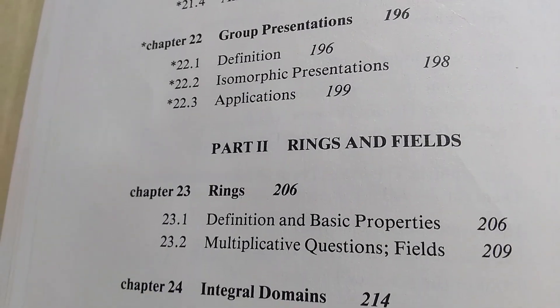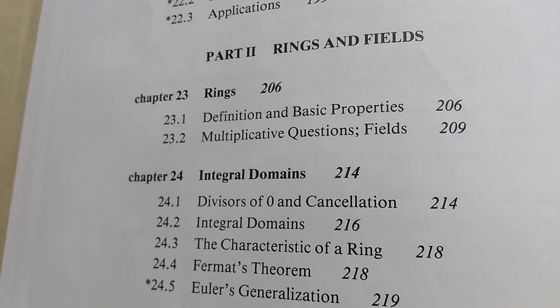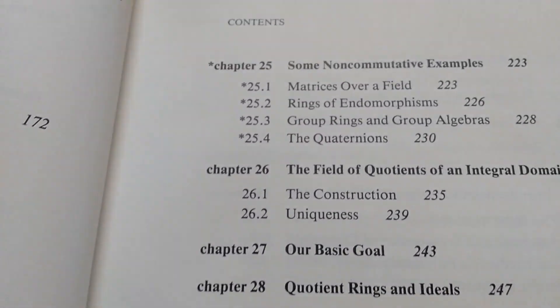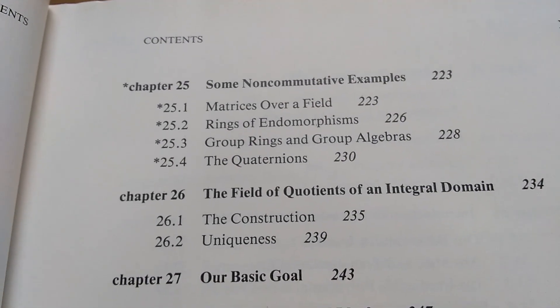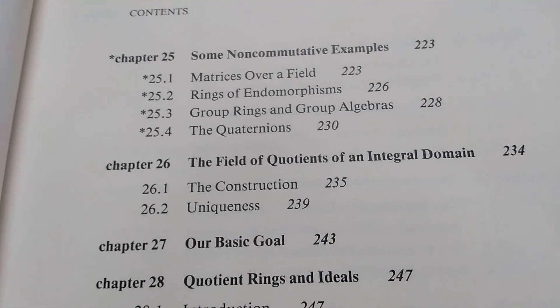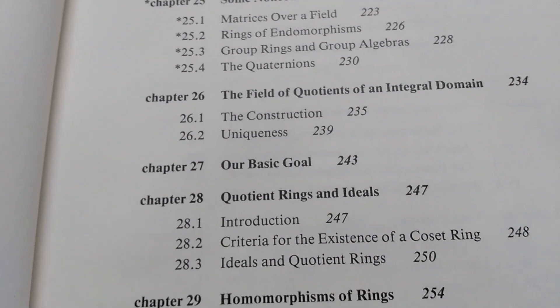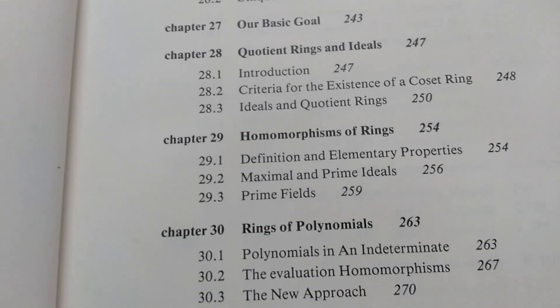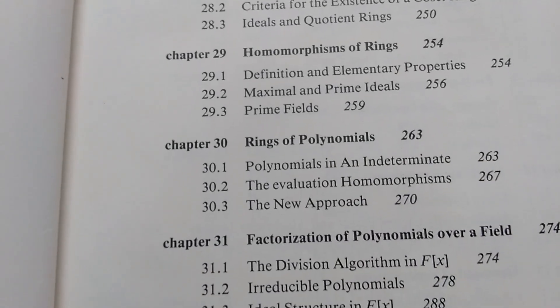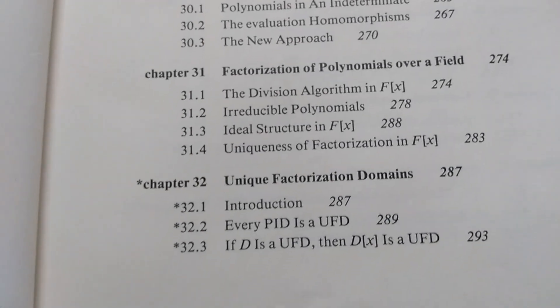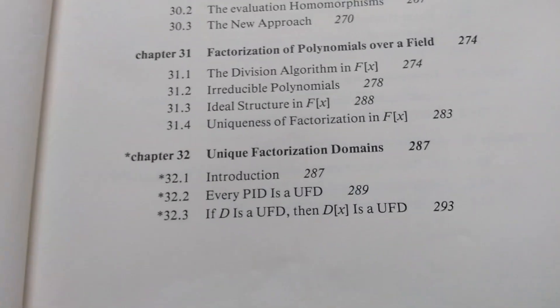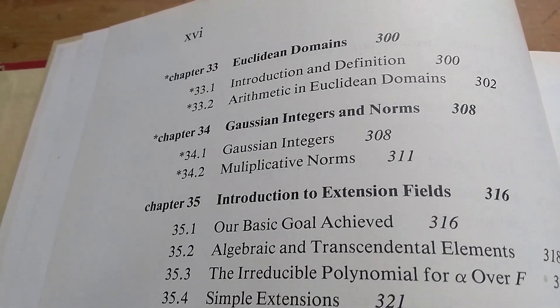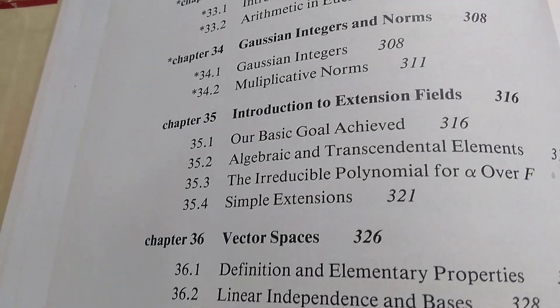Then Fraleigh goes on to rings and fields. So we have rings, integral domains, some non-commutative examples, the field of quotients of an integral domain. Then he goes on to quotient rings and ideals, homomorphisms of rings, rings of polynomials, lots of chapters, right? Tons of stuff in this book. And then UFDs, PIDs, so many chapters. I mean, he just keeps going, right? Just on and on and on.